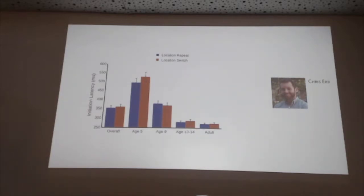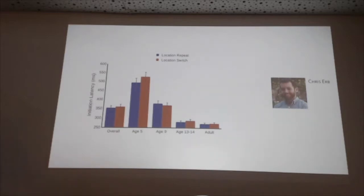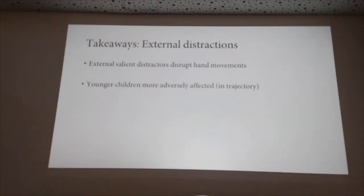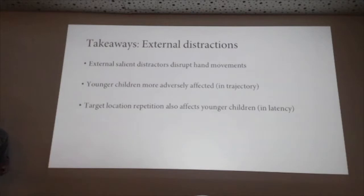Both of these effects are task-irrelevant. People know the salient distractor color is not relevant to their goal, and similarly target location is random — so there's no reason to adopt a strategy of expecting repetitions; they only happen as often as you'd expect by chance. The takeaway is that external salient distractors disrupt hand movement trajectories and younger children are more adversely affected, while target location repetitions affect initiation latency — these two properties affect different components of motor output.